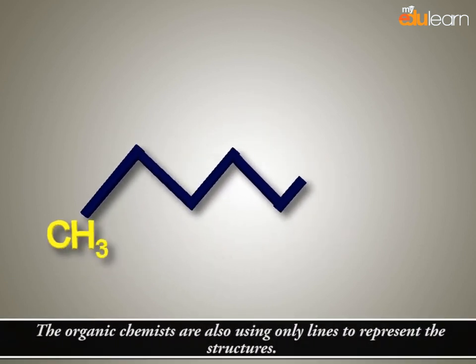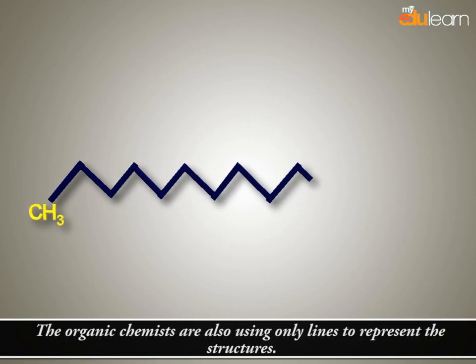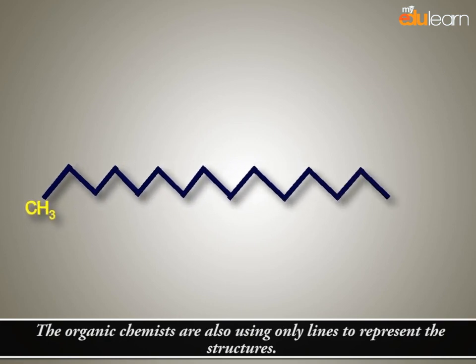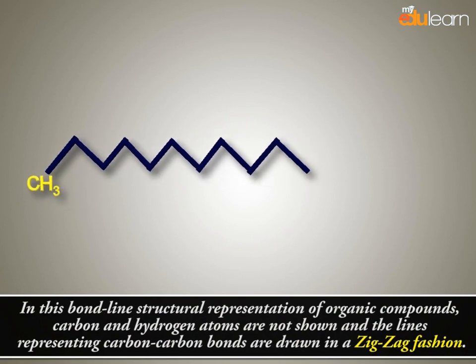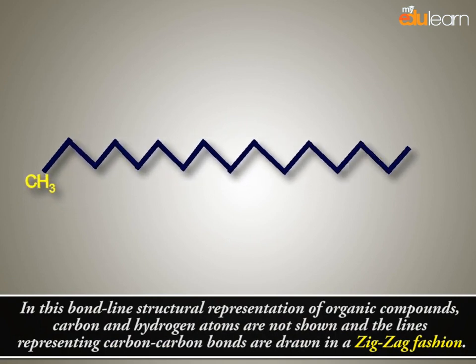Organic chemists also use only lines to represent structures. In this bond-line structural representation of organic compounds, carbon and hydrogen atoms are not shown, and the lines representing carbon-carbon bonds are drawn in a zigzag fashion.